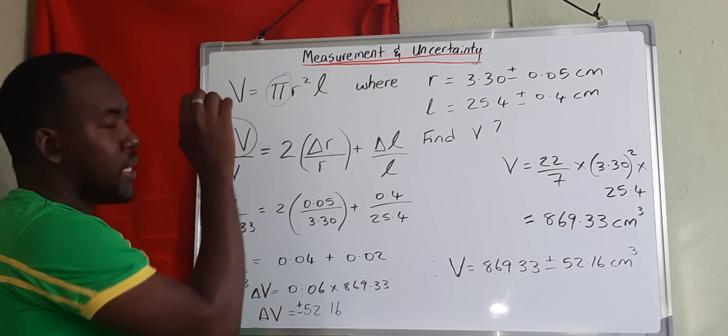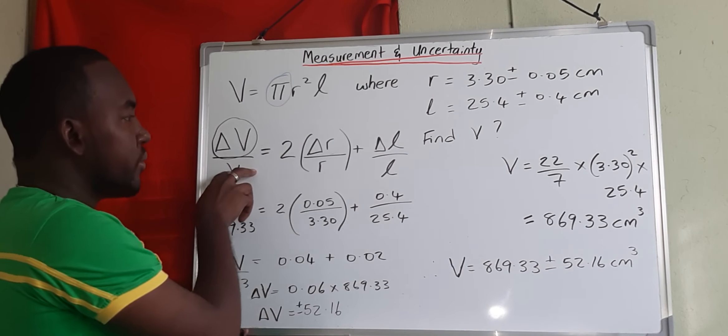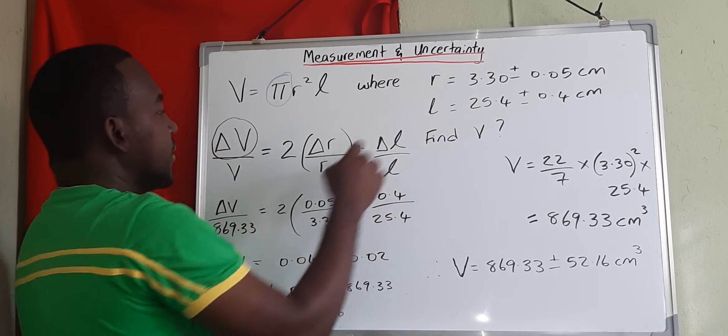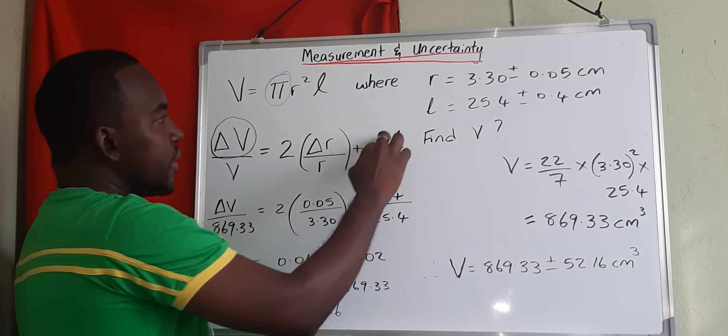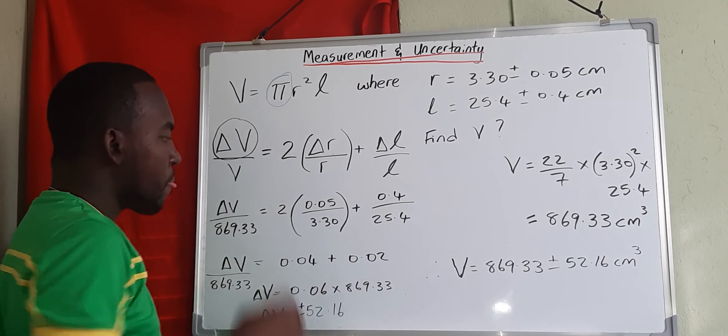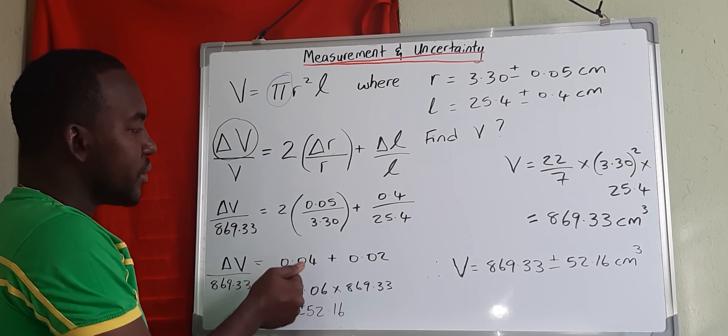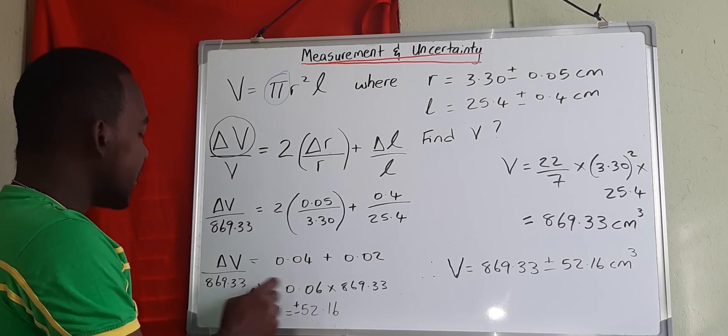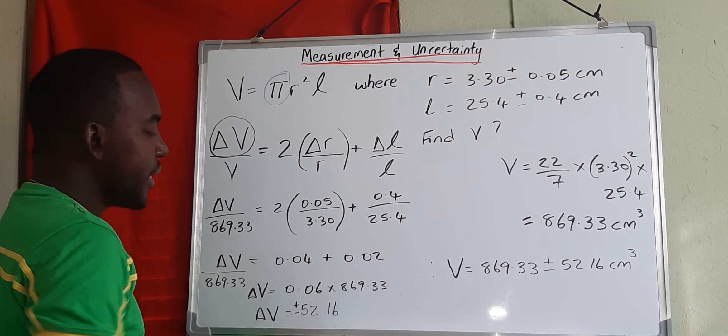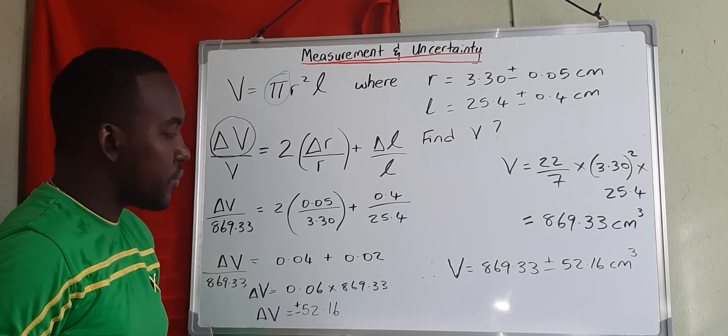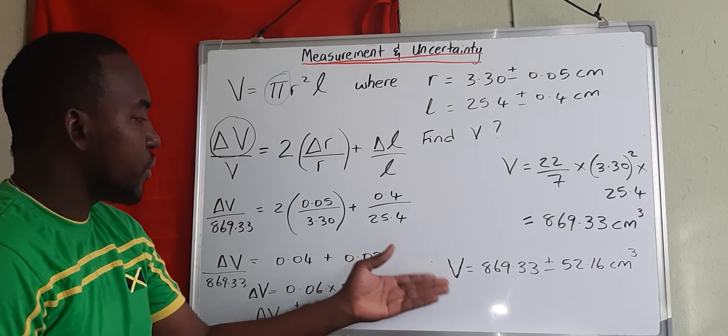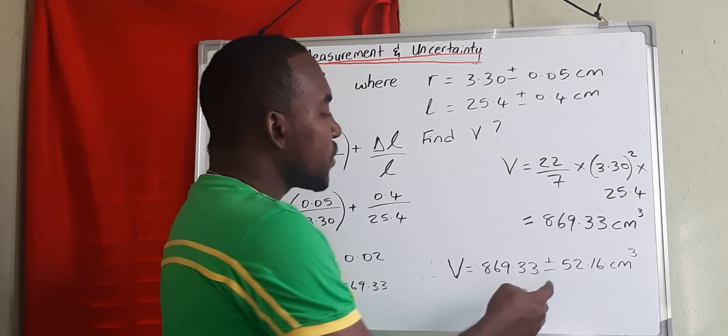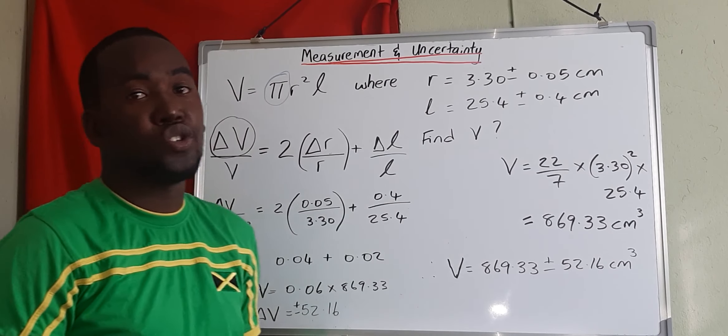So put the value of the volume here, 2 times uncertainty in r over the value of r, plus uncertainty in l over the value of l. All this here is 0.04, this here is 0.02. Now we add these, we get 0.06, and then we multiply by the value of v to get the uncertainty of v, which is 52.16. Therefore, our final answer would be the volume would be 869.33 plus or minus our uncertainty, which is 52.16 centimeter cubed.